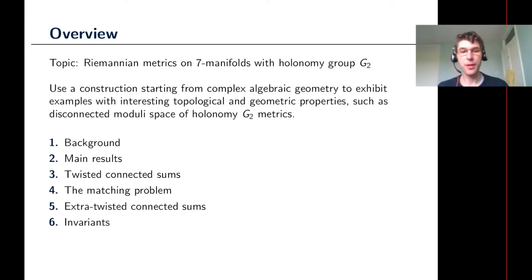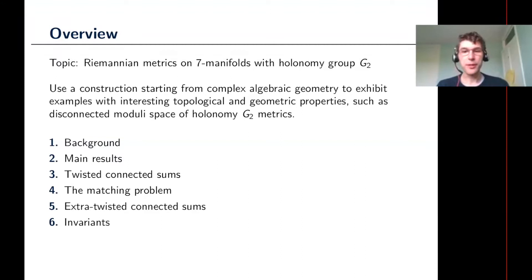The rough structure is: first I want to give a little bit of background on what holonomy G2 means. Then I want to present some of the most interesting features of the examples that we found. Then I want to get on to talking about the twisted connected sum construction. Because it's a more algebraic audience, I also want to spend time talking about the technical heart of the construction — how to match the pieces together — which boils down to understanding precise details about the moduli spaces of K3 surfaces. Finally, I want to talk about the more recent generalization where you take pieces from complex algebraic geometry with extra automorphisms to exhibit more interesting topological phenomena, and if there's time, say something about the invariants used to distinguish between the examples.